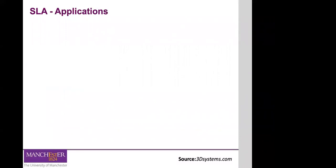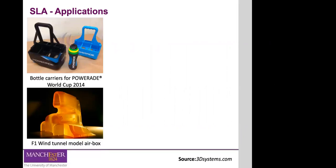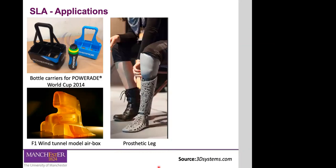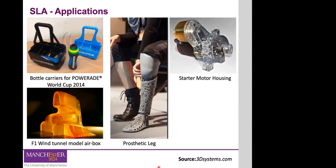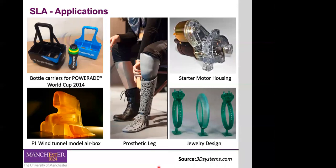In terms of applications, SLA is quite similar to FDM — you can create 3D printed parts like bottle carriers. But a key differentiator is the higher accuracy and resolution of SLA, which allows building parts with very fine details. Formula 1 teams take advantage of that higher accuracy to create very well-defined 3D models to study the performance of different parts in competition cars. You can also create prosthetic implants, parts for the automotive industry, and jewelry design — mainly because of the resolution that SLA allows you to achieve.